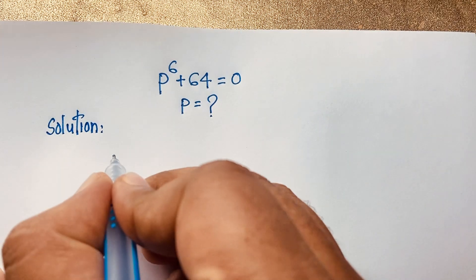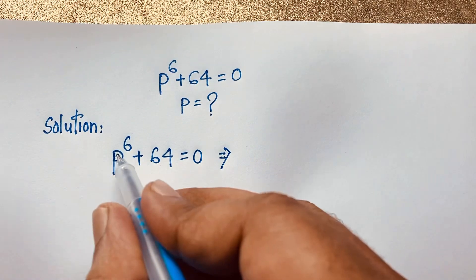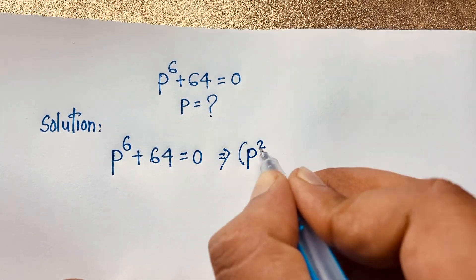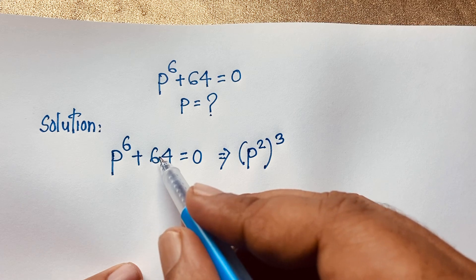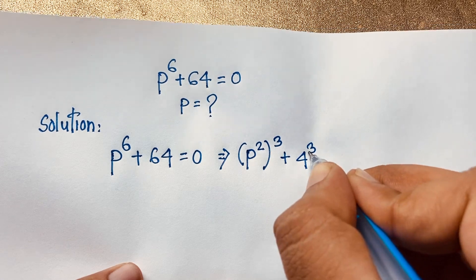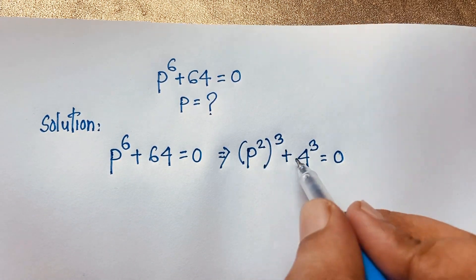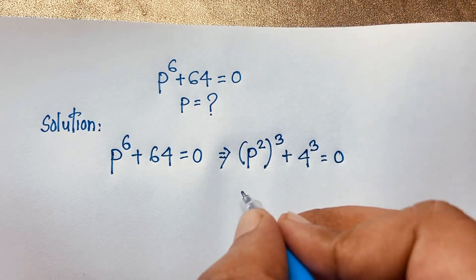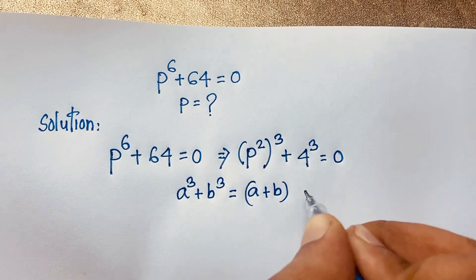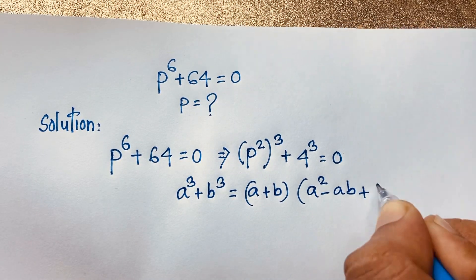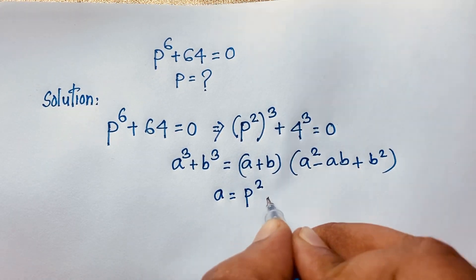So here p to the power 6 plus 64 is equal to zero. We can write p to the power 6 as (p squared) to the power 3, since 2 times 3 equals 6. And 64 equals 4 to the power 3, since 4 times 4 times 4 equals 64. Now we have the form a cubed plus b cubed, and the formula is a cubed plus b cubed equals (a plus b)(a squared minus ab plus b squared).